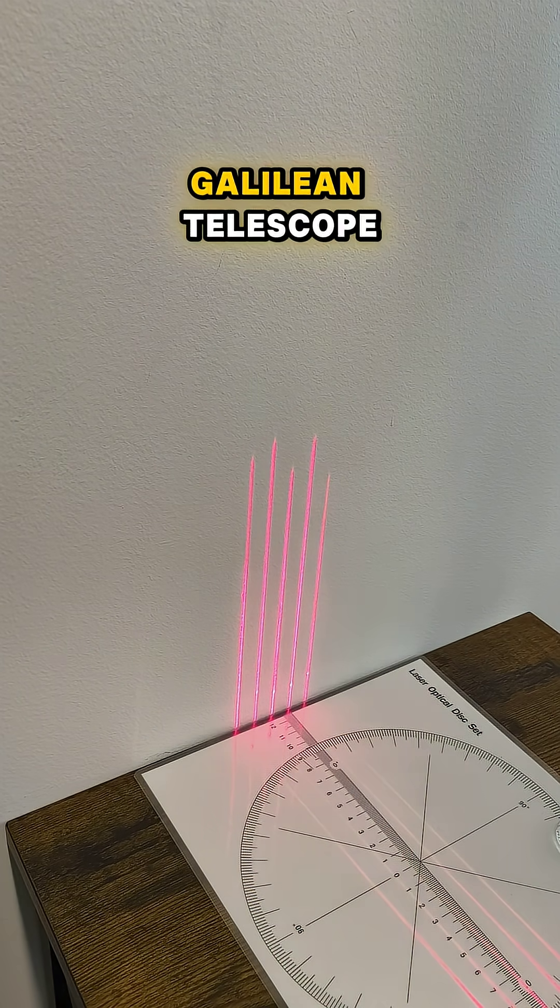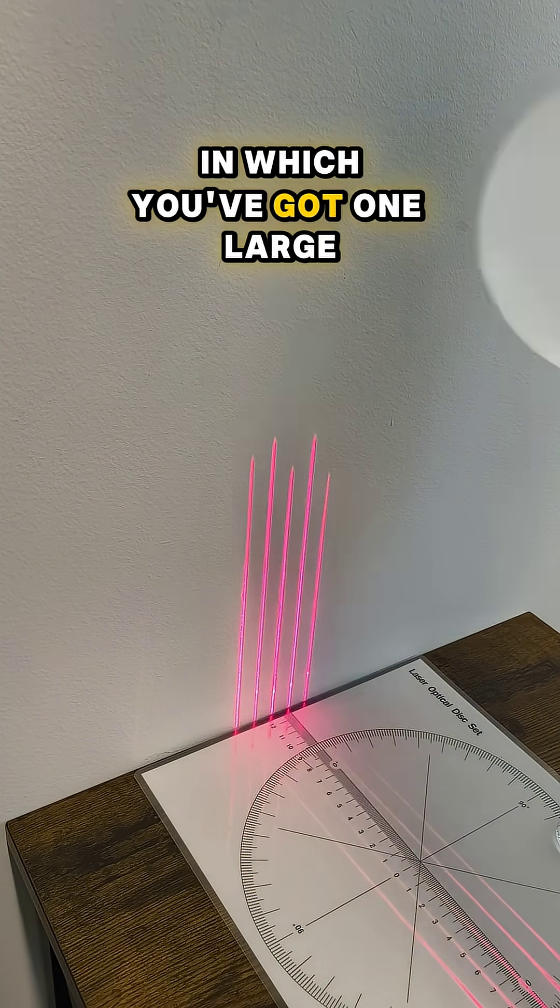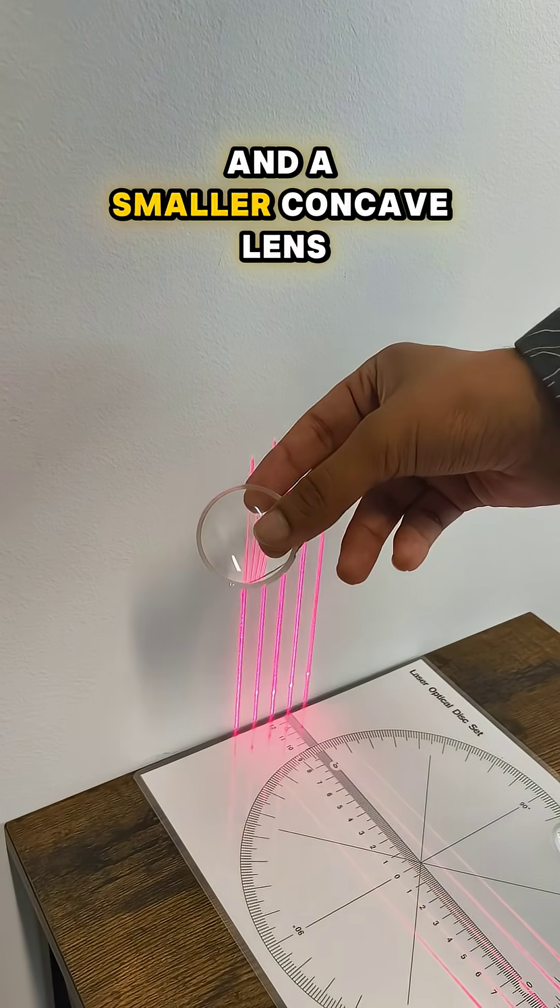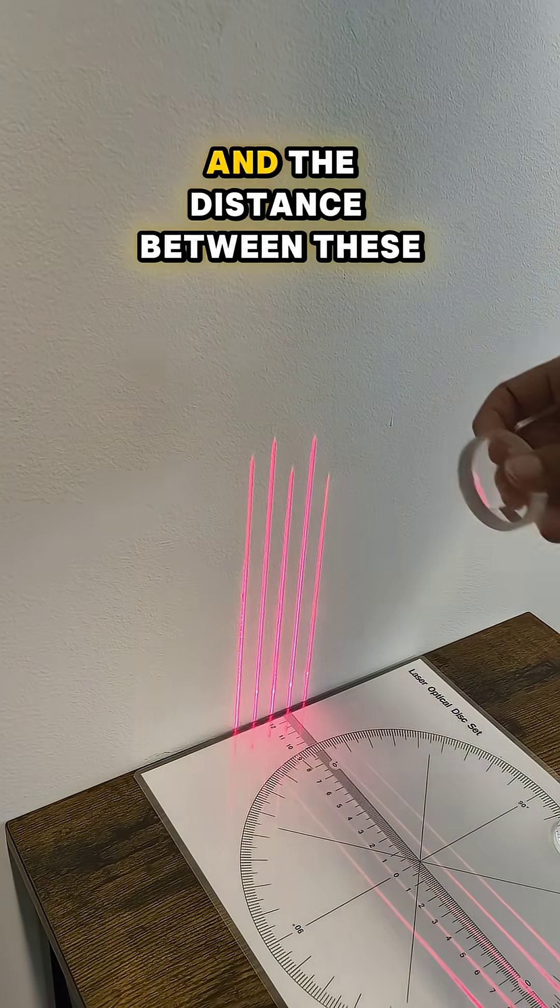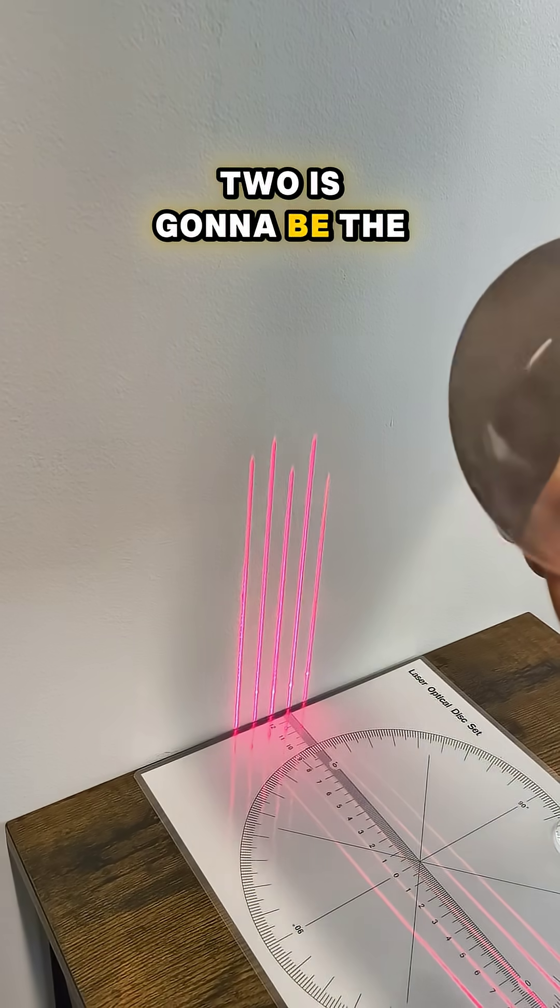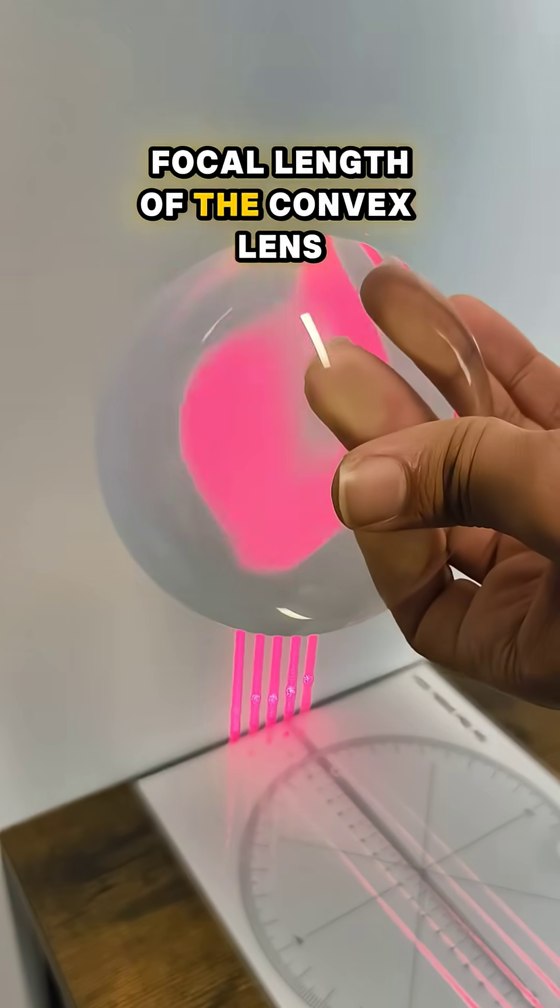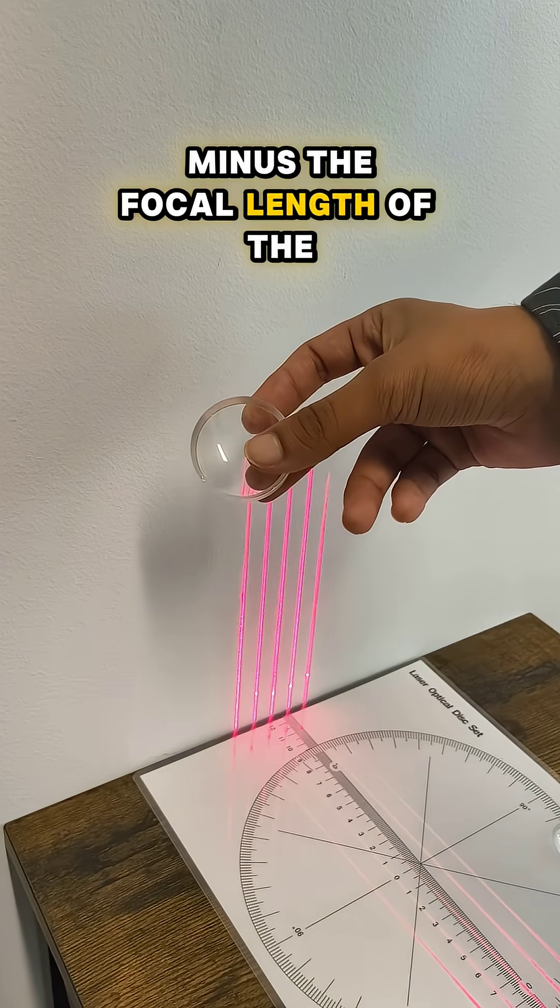Now we're going to try out the Galilean telescope, in which you've got one large convex lens and a smaller concave lens to magnify the image. The distance between these two is going to be the focal length of the convex lens minus the focal length of the concave lens.